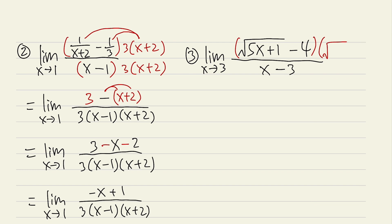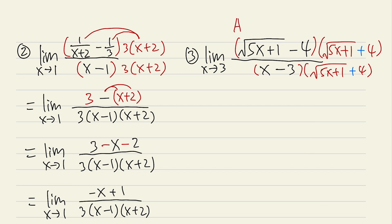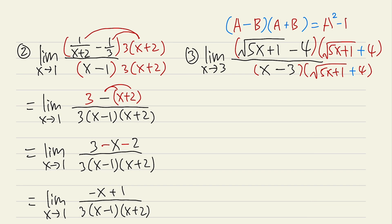We are going to multiply the top and bottom by the conjugate: square root of (5x plus 1) plus 4 — same expression but changing minus to plus. We do the same on the bottom. The reason we multiply by the conjugate is that (a minus b)(a plus b) equals a squared minus b squared, which eliminates the square root.